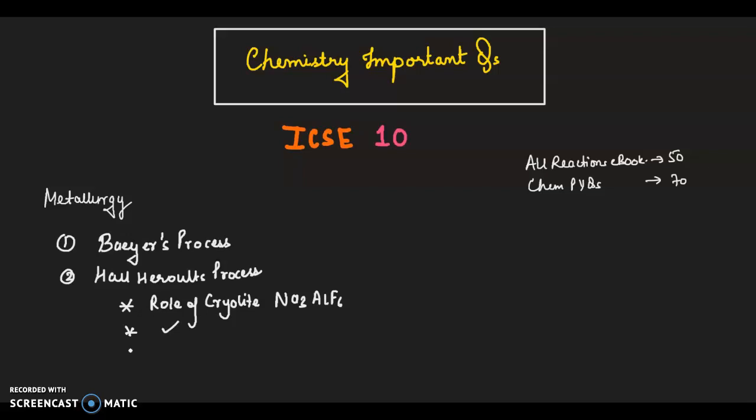Then we have role of fluorspar and cryolite. Please make sure to learn all these reasoning questions. Then we have role of powdered coke. There is Hoope's process.